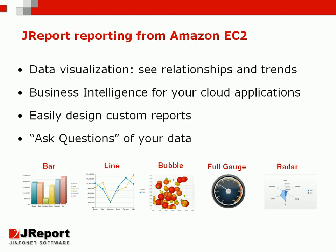When decision makers visualize and interact with business intelligence data, they're more equipped to make better business choices. With JReport, your cloud applications within Amazon EC2 can now have a seamlessly embedded business intelligence tool with visuals like graphs, crosstabs, and charts like the one shown here. You can easily add high performance reporting, data visualization, dashboards, and ad hoc analysis to your current cloud applications that use Amazon EC2.